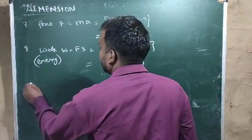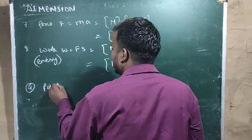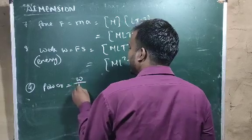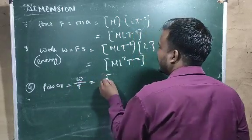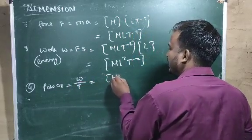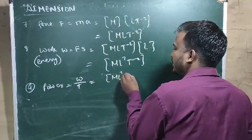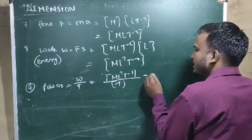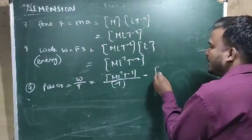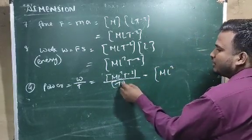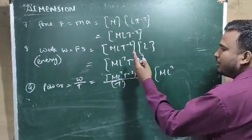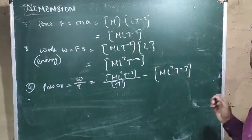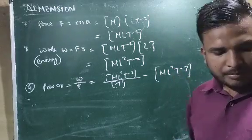Number 9 is power. Power equals work done divided by time. The dimensional formula for work done is M L² T⁻² and time is T, so T⁻² × T⁻¹ gives T⁻³. The result will be M L² T⁻³. This is the dimensional formula for power.